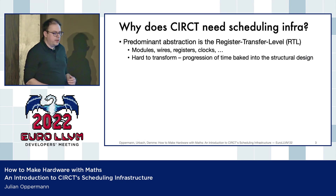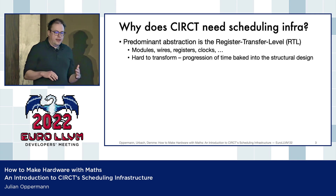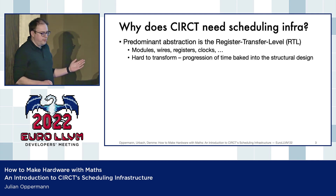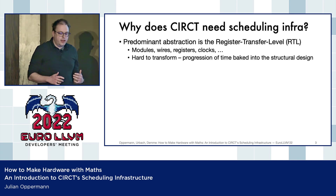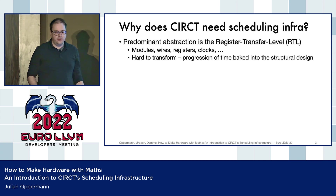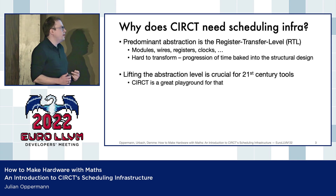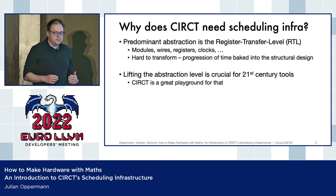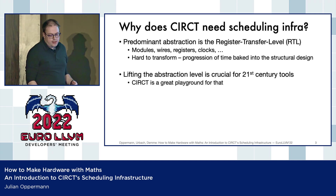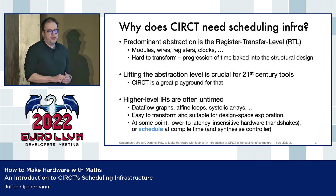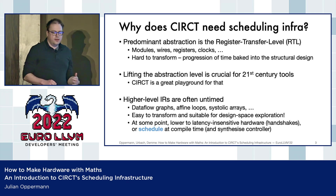Why does Circuit need a scheduling infrastructure? Hardware is mostly described in what's called a register transfer level description — basically what we saw on the previous slide on the right side — where you deal with explicit hardware. But that's hard to transform because the progression of time is actually built into the structure of the design. Circuit's goal is to raise the abstraction level of hardware design. Suitable higher-level intermediate representations are often untimed — we deal with graphs or loops as I just showed — and these are easy to transform and good for design space exploration, but at some point we have to get back to the RTL level.